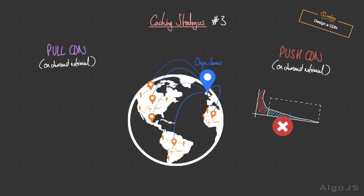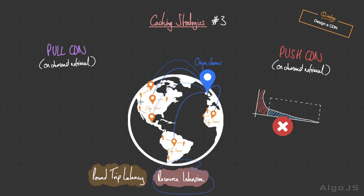One common problem in pull CDN architectures is when a user requests content from their nearest proxy server that doesn't have it, but a neighboring edge server does — the request still makes a cross-continental trip to the origin server, resulting in suboptimal content delivery. A naive approach of searching through all edge servers falls apart due to round-trip latency from sequential requests, intensive resource usage, and lack of scalability as the CDN expands with more edge servers.